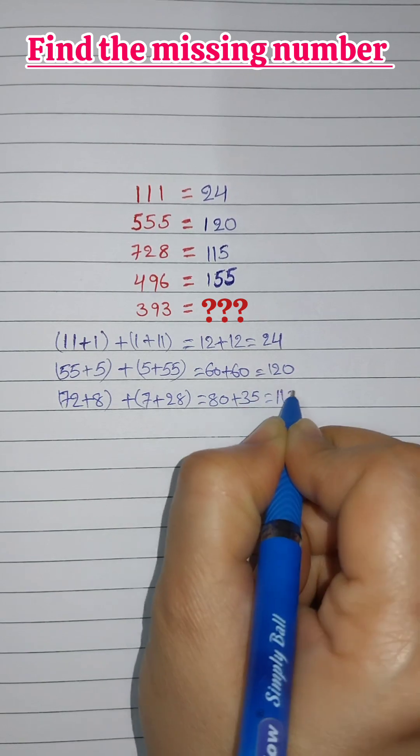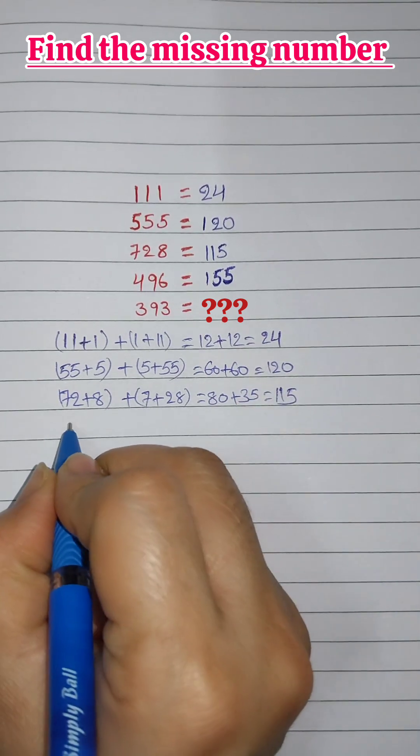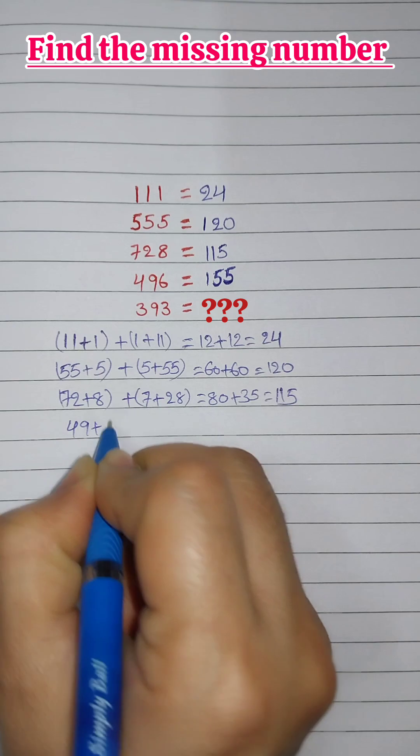For 728, 72 plus 8 plus 7 plus 28 equals 80 plus 35 equals 115.